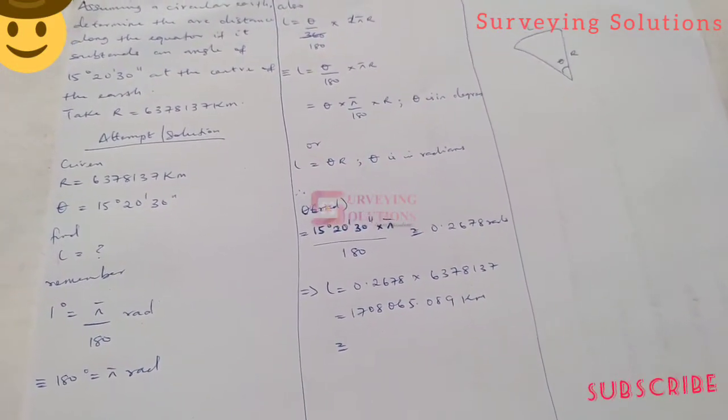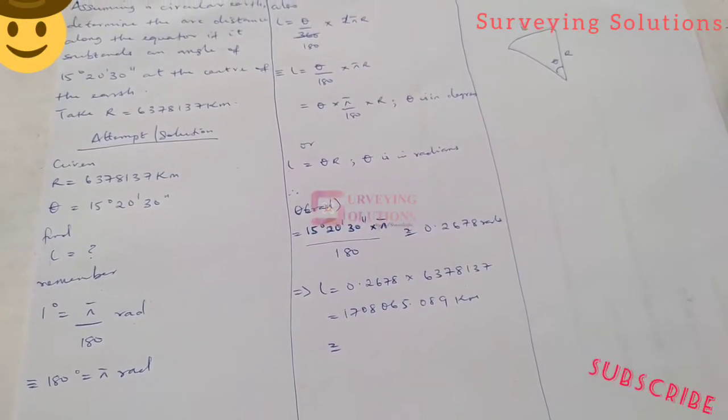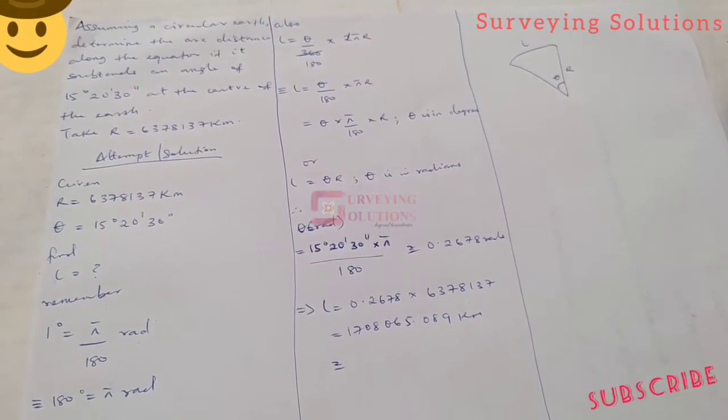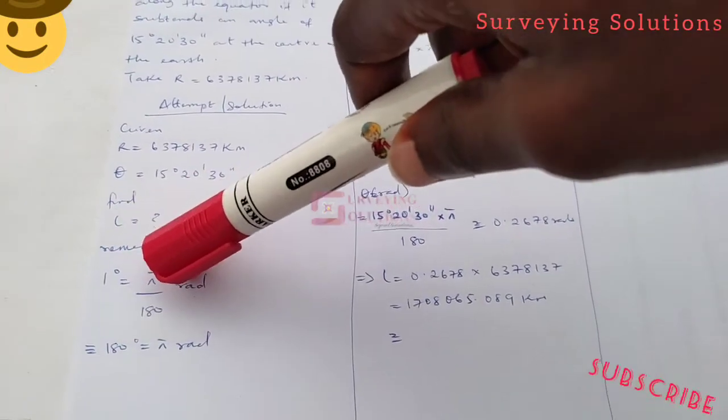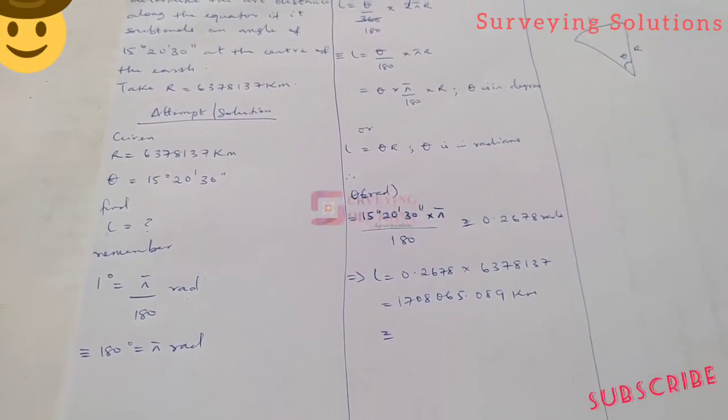By applying this expression, one degree equals π over 180 radians, we need to convert the angle from degree-minute-second to radians.